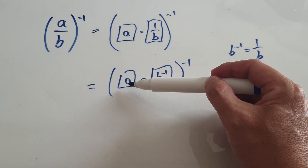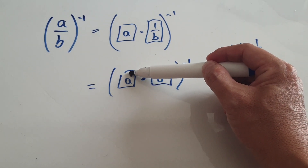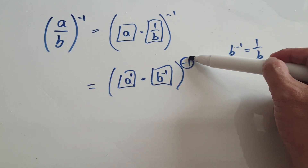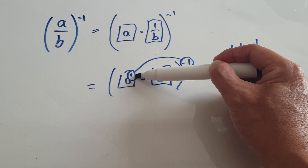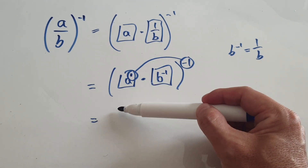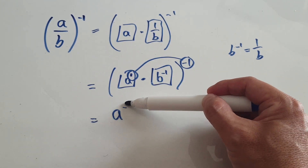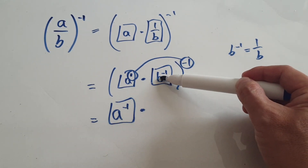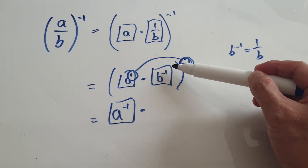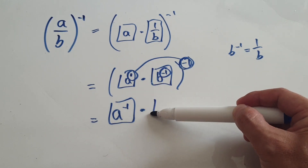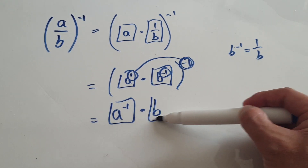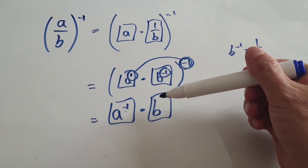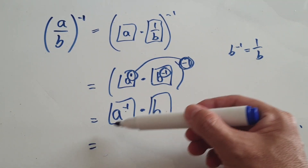Once it's in this form, imagine there's a one here, because a to the power of one is a. Now you can multiply this with this — that gives you a to the power of negative one. That's one block, and then times this block: negative one times negative one gives you b to the power of positive one, which is the same as b.